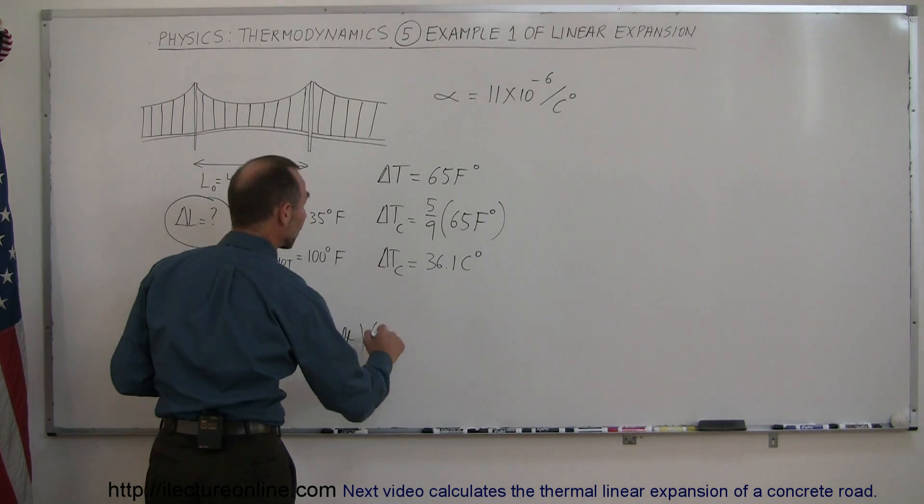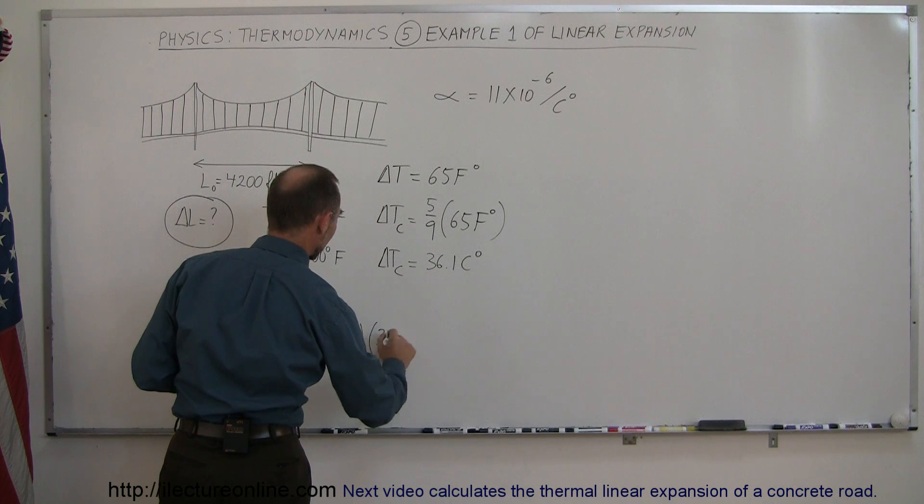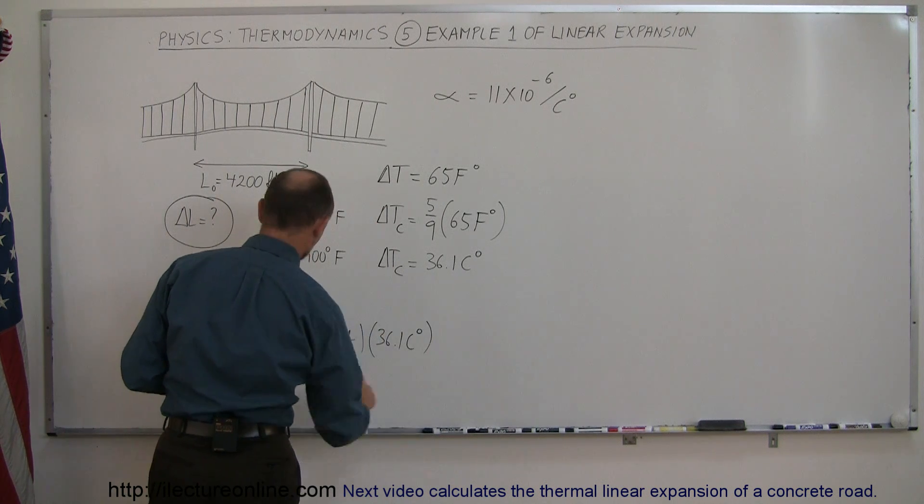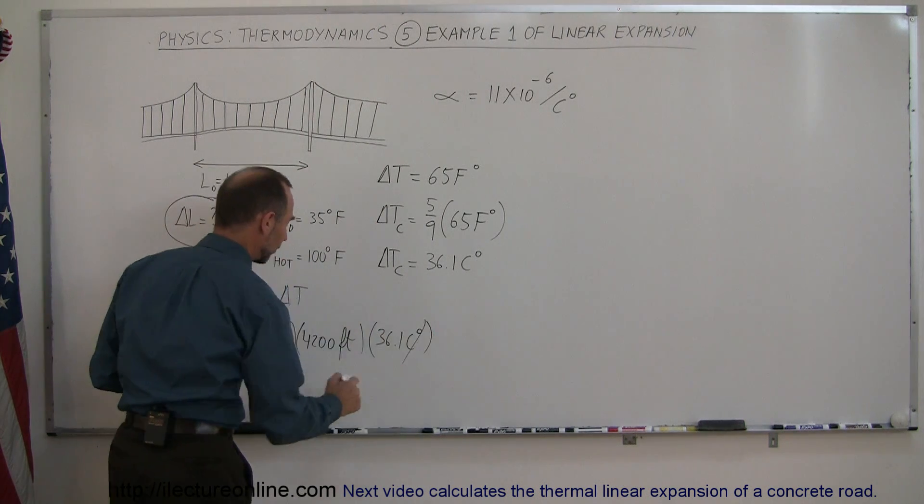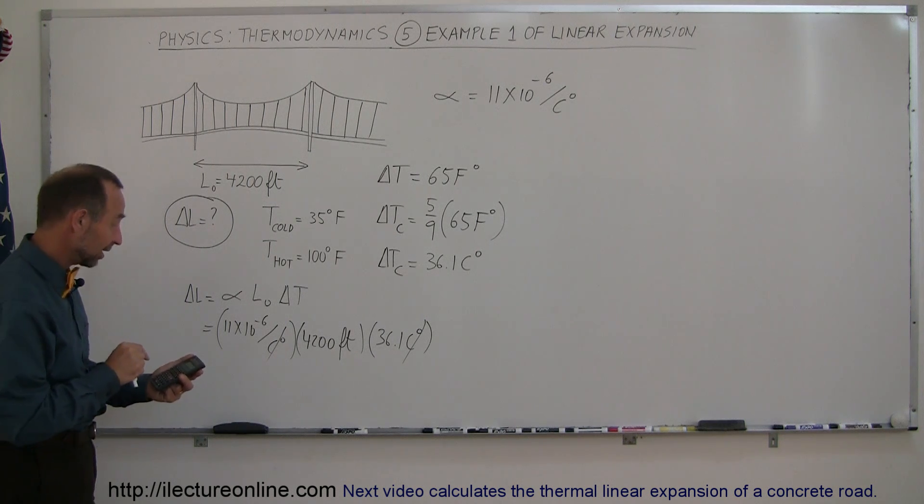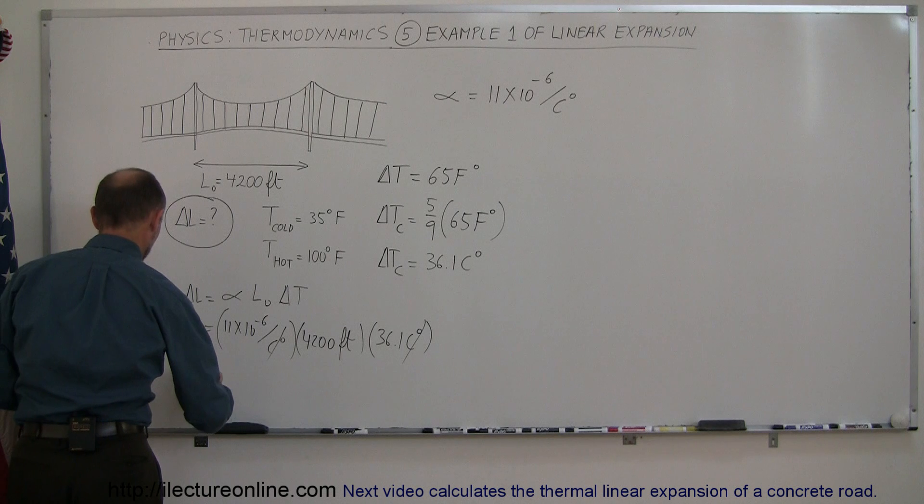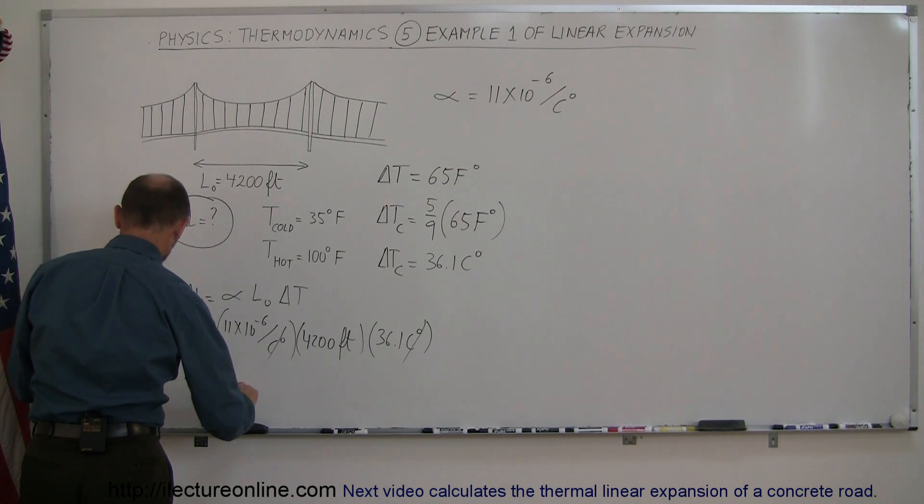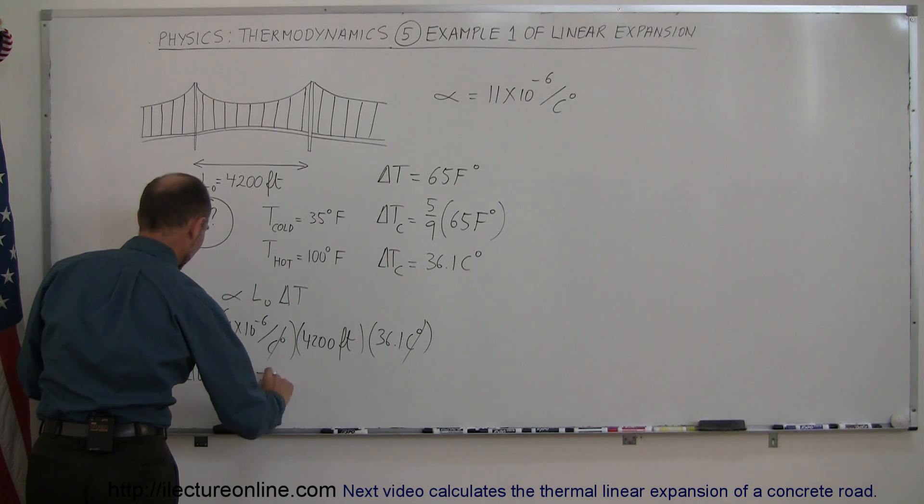And then the change in the temperature is, let's see here, it was 36.1 centigrade degrees. And of course, this cancels out with that. And we multiply that times 4,200 and multiply that times 11e to the minus 6 equals, and look at that, the change in length of the bridge would be equal to 1.67 feet.